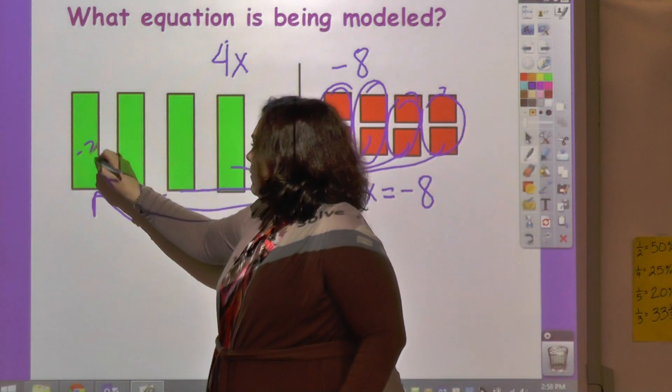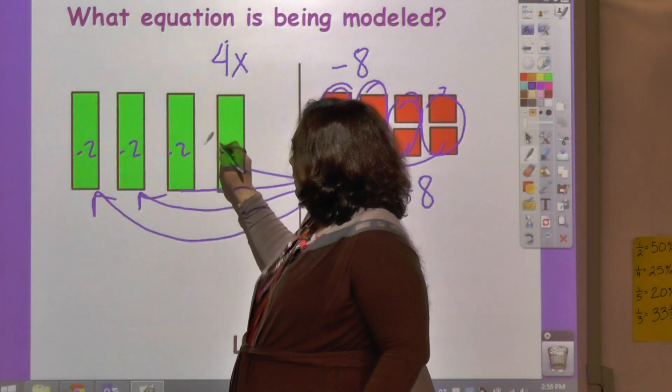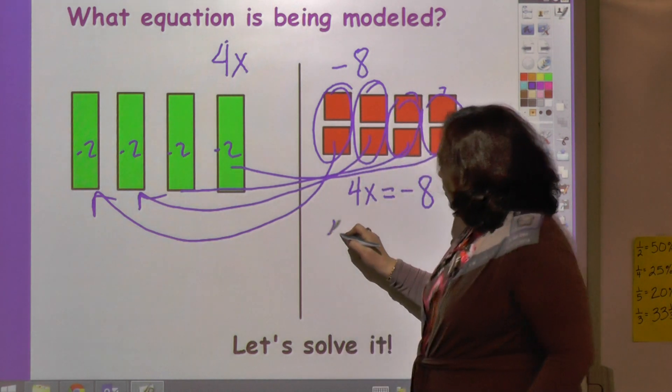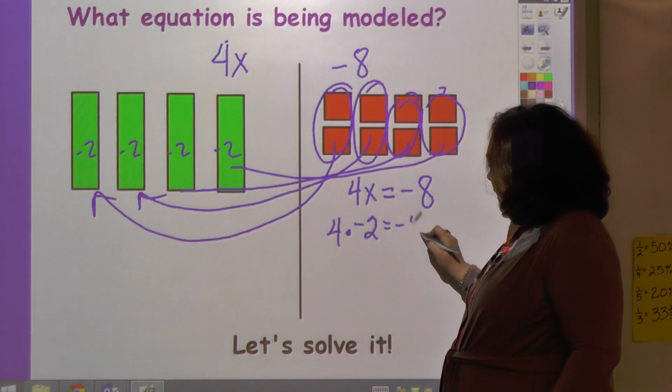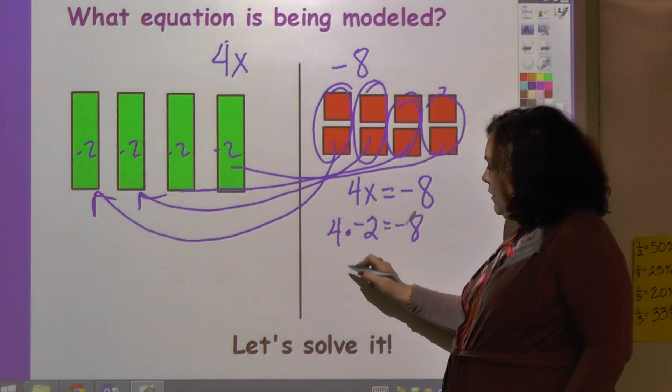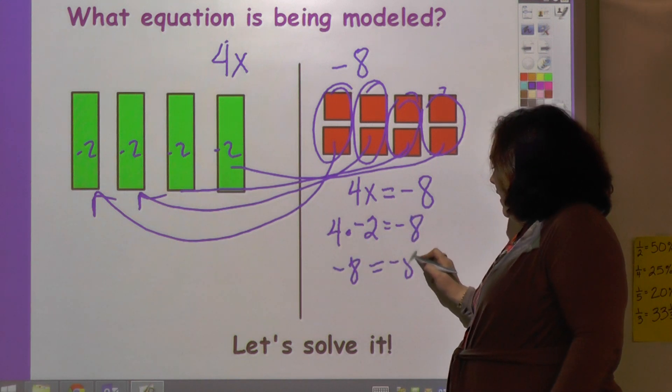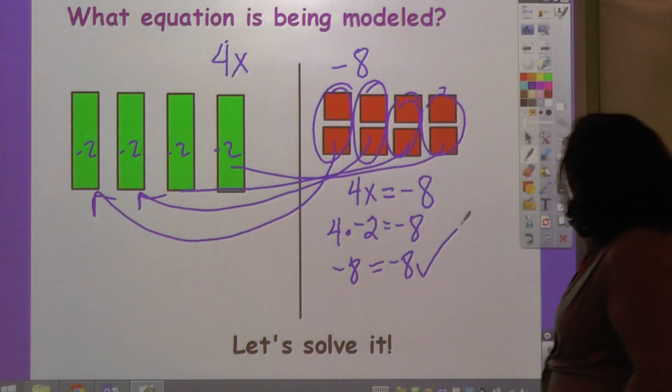This is worth negative 2, and this is worth negative 2. All of these are worth negative 2. So 4 times negative 2 equals negative 8. 4 times negative 2 is negative 8. So therefore, negative 8 equals negative 8. And it checks.